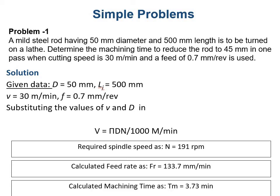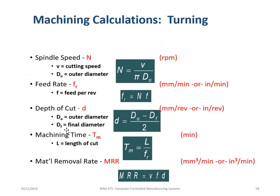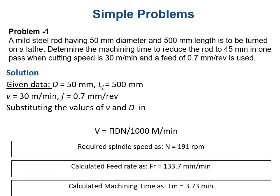We need to calculate the machining time, and to determine machining time we need the feed rate. To determine feed rate, we multiply number of revolutions with feed. So feed 0.7 multiplied by N = 191 gives us calculated feed rate as Fr = 133.7 millimeter per minute.